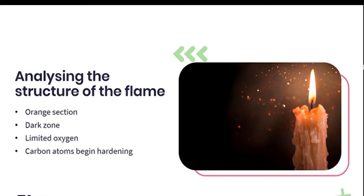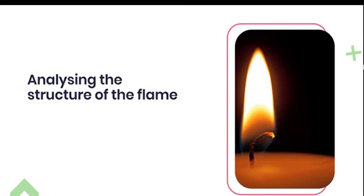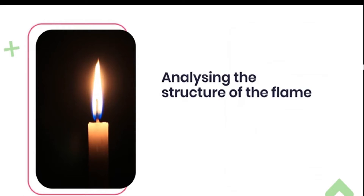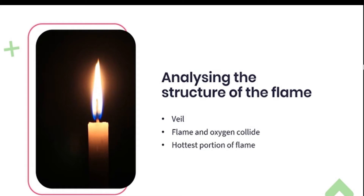This results in the area just above it where you will begin to see the wick blacken because of the carbon atoms hardening. In the bottom half of the next section, the yellow zone, there is an even greater buildup of soot particles. While rising, they get hotter and hotter and ultimately result in the luminous flame we see. Around the edges of the yellow flame and extending all the way down to the blue zone at the base is another very thin blue area, also known as the veil. This is where the flame comes into direct contact with oxygen and is the hottest portion of the flame, reaching up to 1400 degrees Celsius.